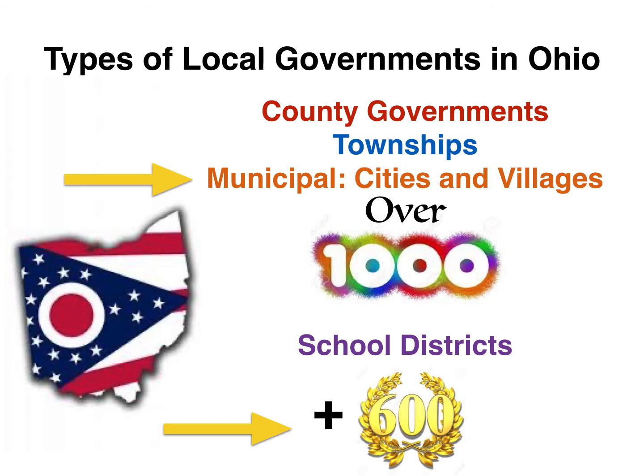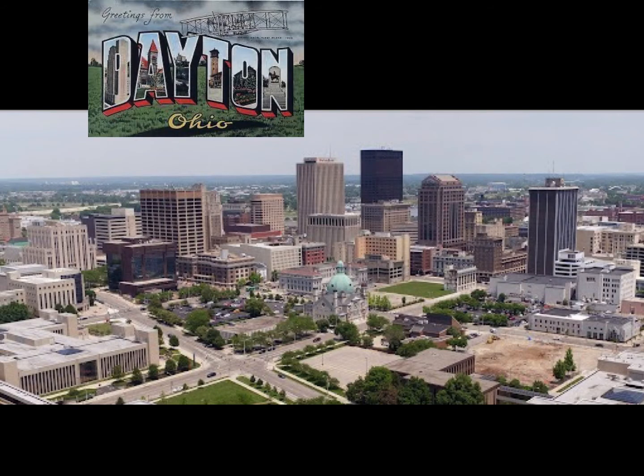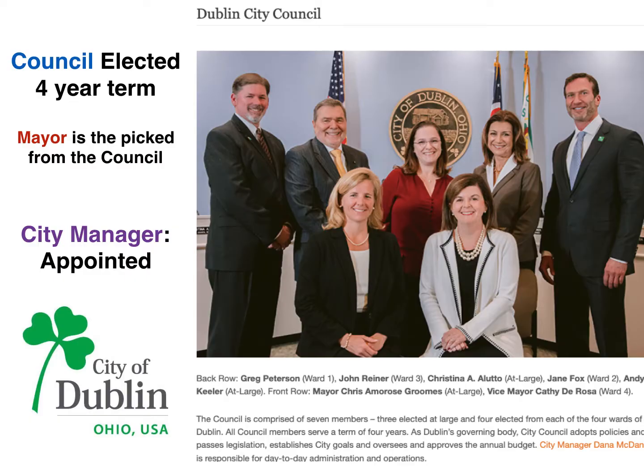We're going to go into deeper study of cities and villages in Ohio. Whether we're talking about bigger cities like Dayton or the city of Dublin, all cities and villages in Ohio, as directed by Ohio law and the Ohio Constitution, have a certain type of structure. There are basically two types of structure that a city government can have, whether we're talking Dublin or Dayton — it doesn't matter the size. The first option is an elected council.